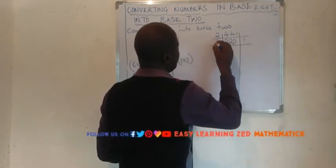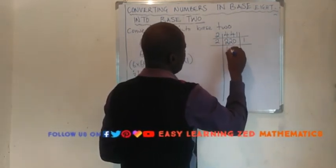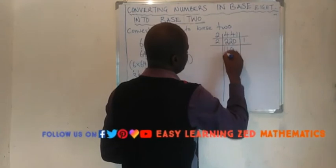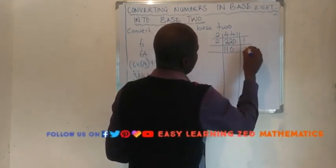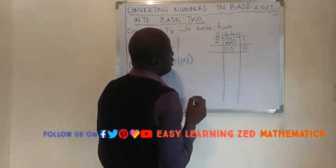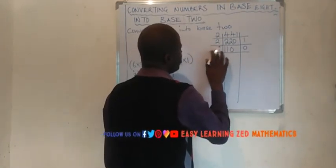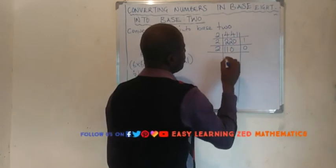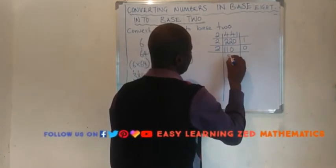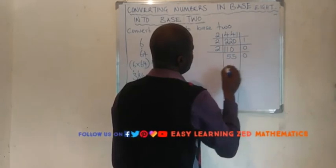220 divided by 2 will give us 110 remainder 0. Then 110 divided by 2 will give us 55 remainder 0.